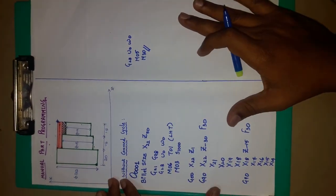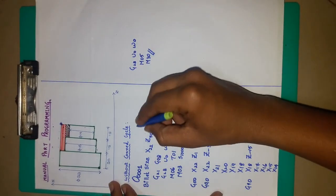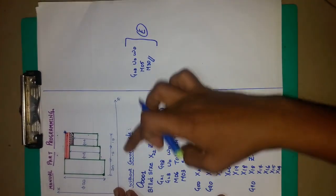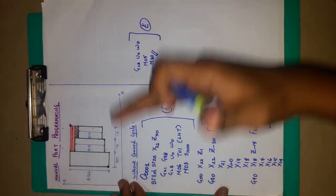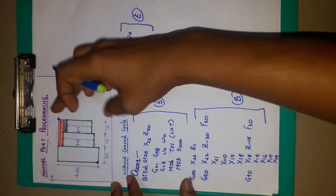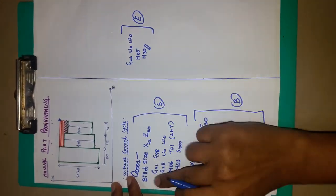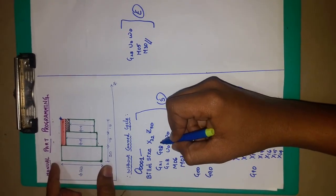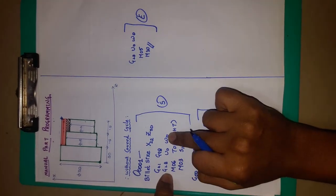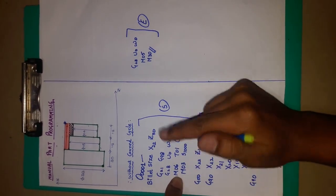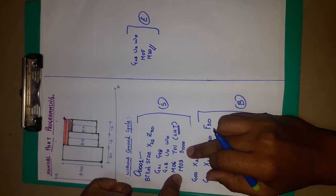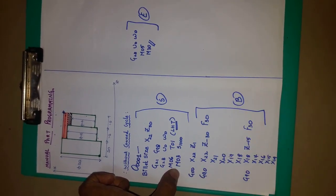Now we are going to take the first review of the session. The given program consists of three parts: start of the program, body of the program, and end of the program. The start of the program is the same for every turning cycle. It includes: the program number O00001; billet size — X is 22, Z is 50; G21 for data input in mm; G98 for feed per mm; G28 U0 W0 for home position in FANUC system; M06 for tool change using left hand tool T01 for box turning; and M03 for spindle speed at 1000 or 1200 RPM, which is constant for every box turning cycle.